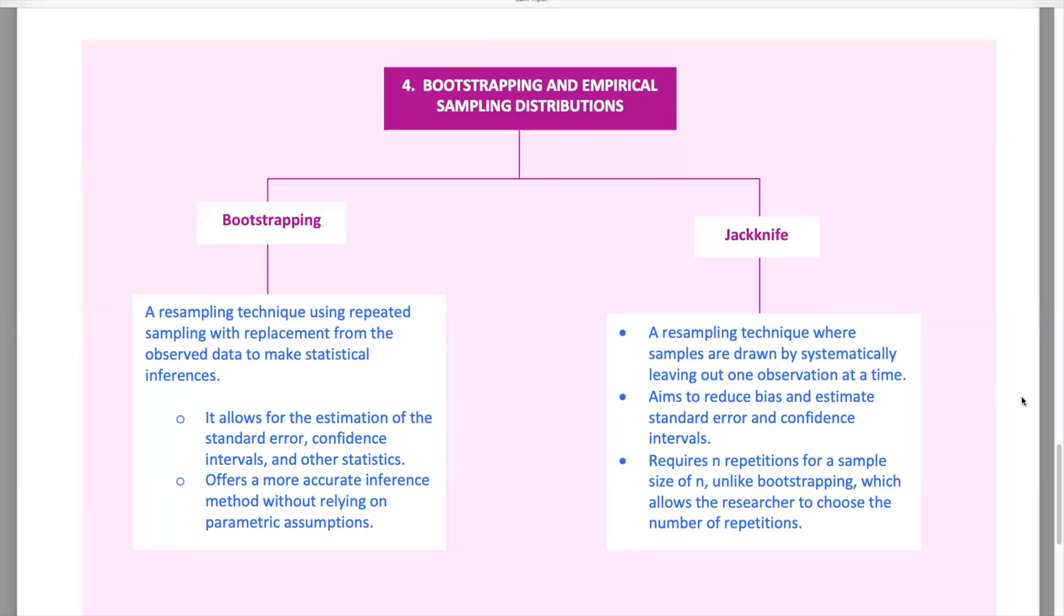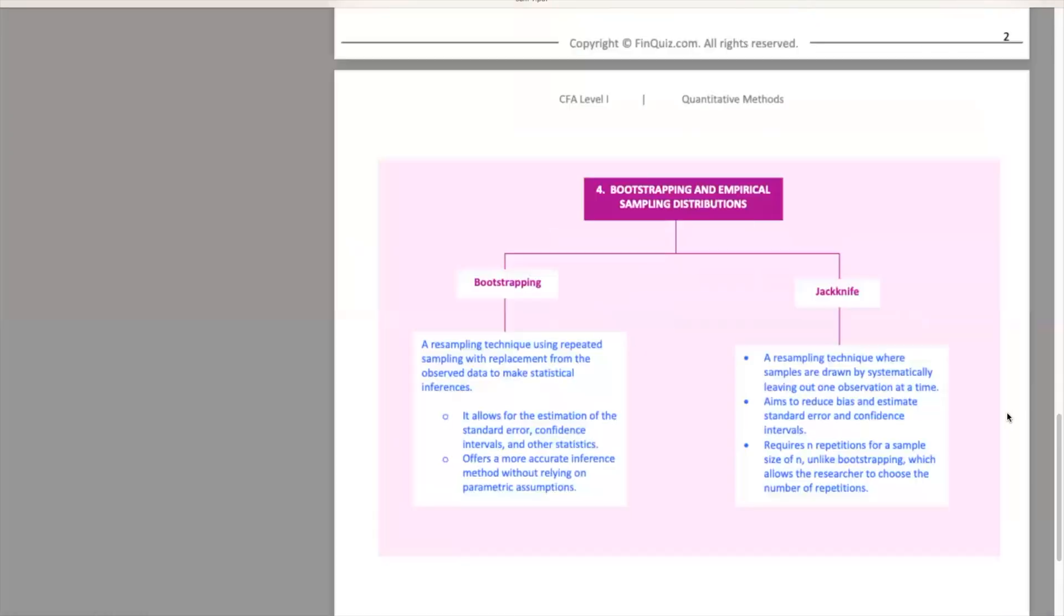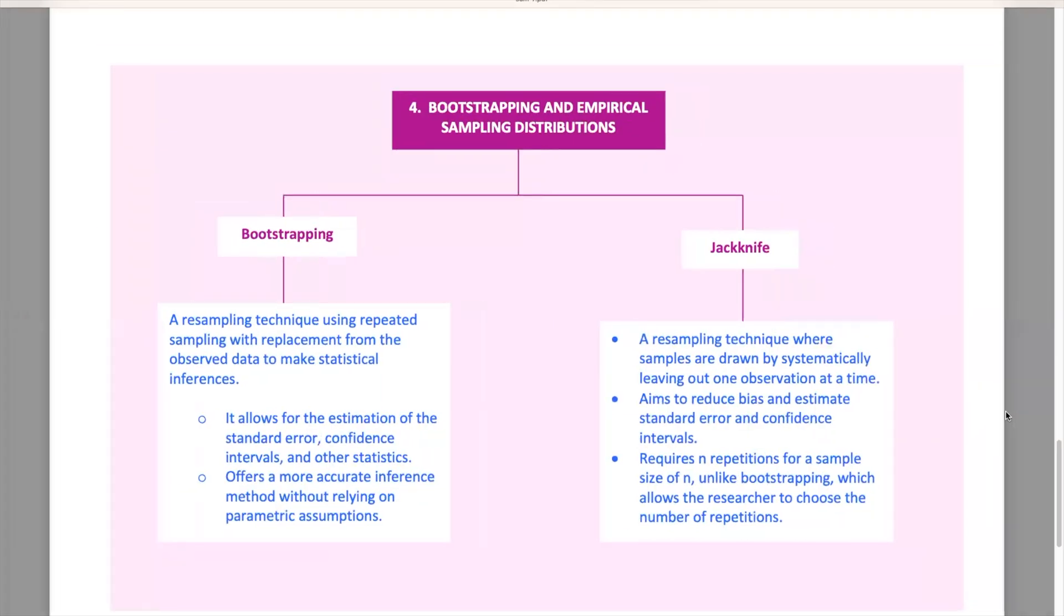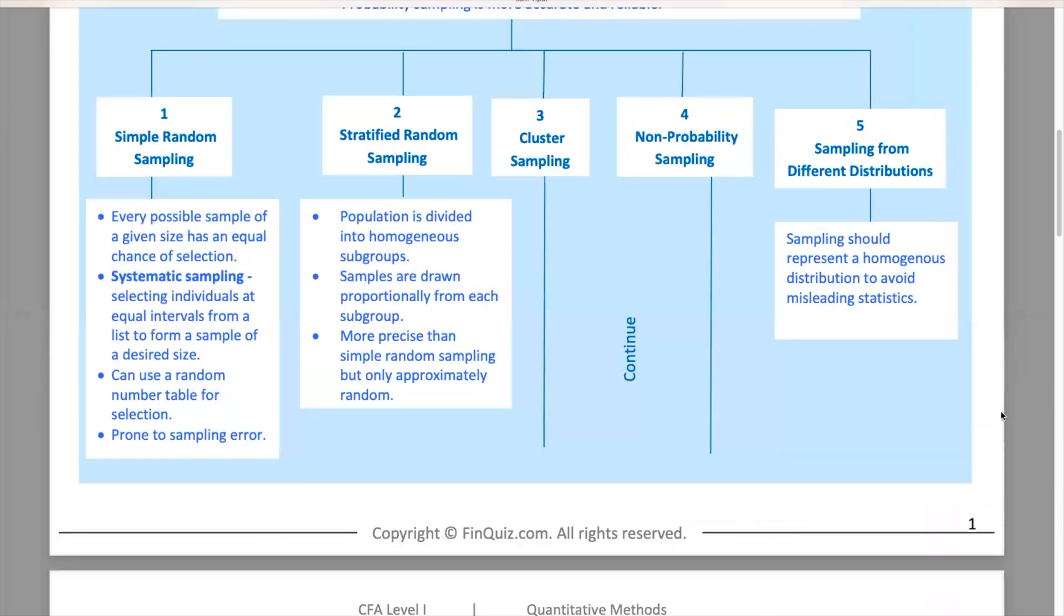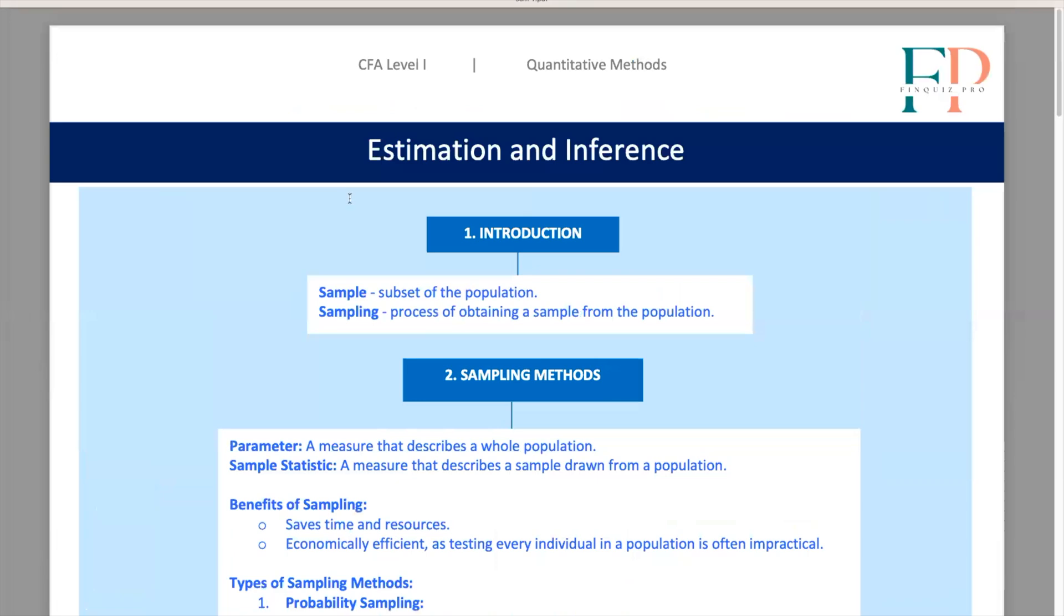That was a lot, but you guys did great! Remember, understanding sampling is crucial because it forms the backbone of how we make inferences about larger populations from smaller samples. To solidify your understanding, practice with examples from the CFA curriculum. Work through problems to see these concepts in action. Applying these methods in real-world scenarios will make them second nature. All right, if something pops up later, don't hesitate to ask. Have a great day, everyone!